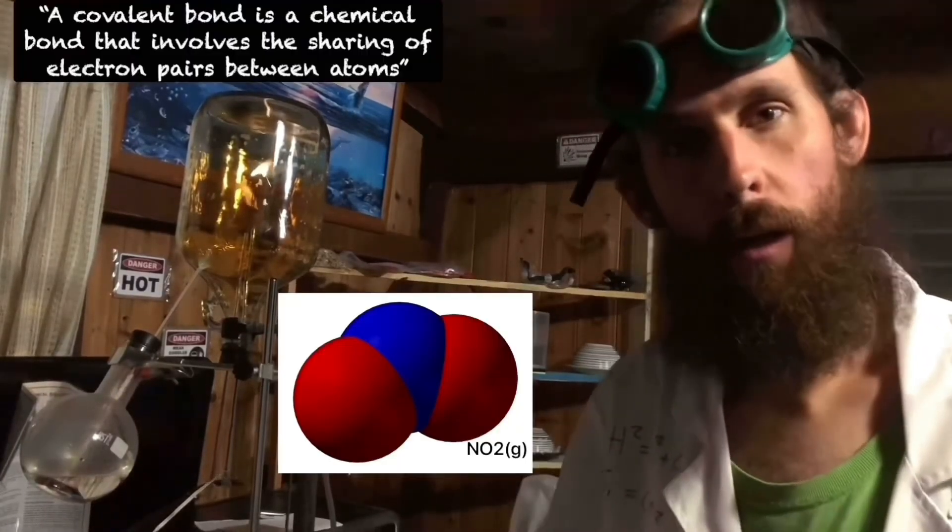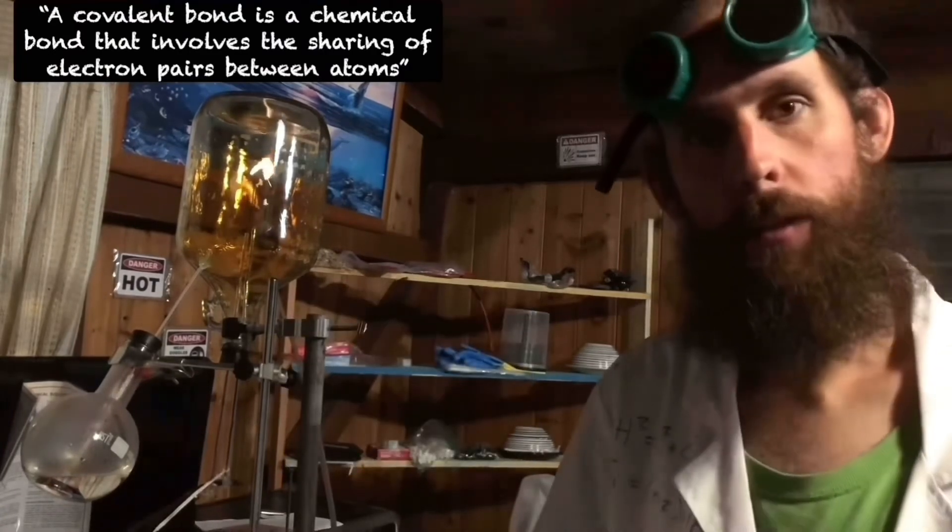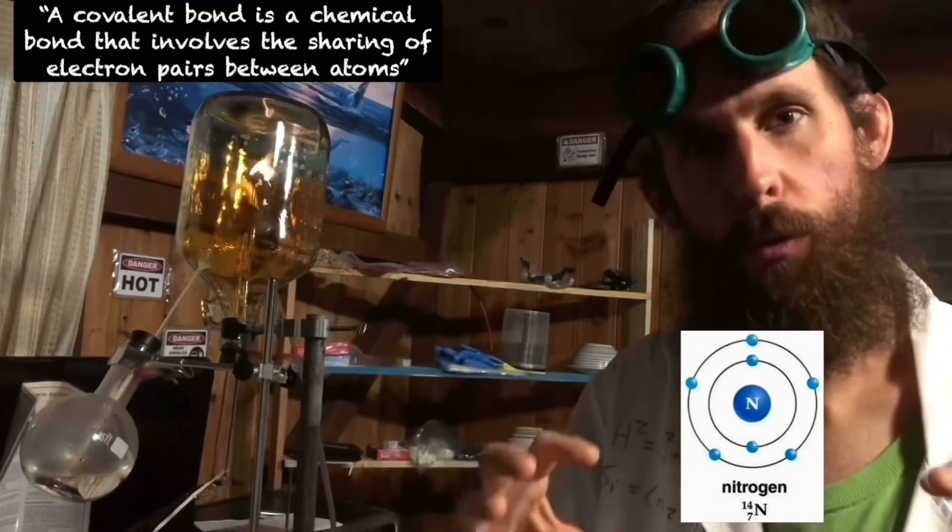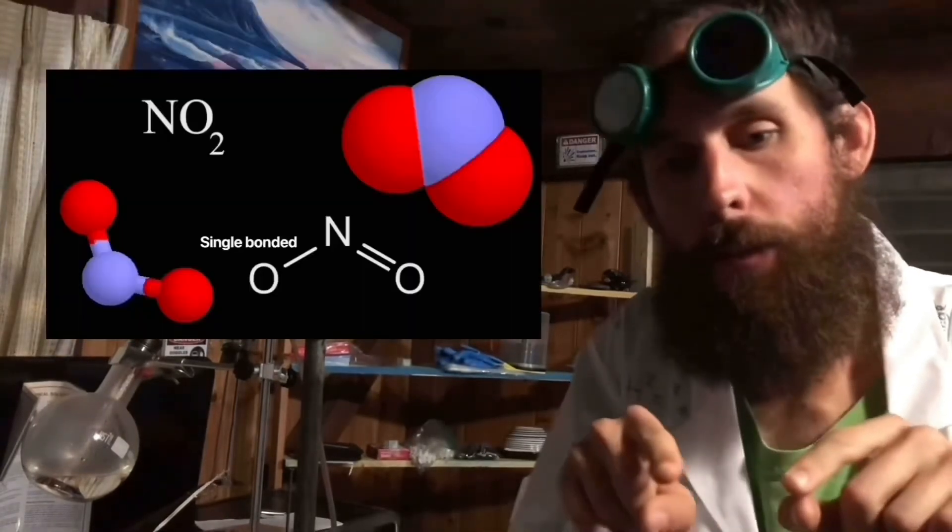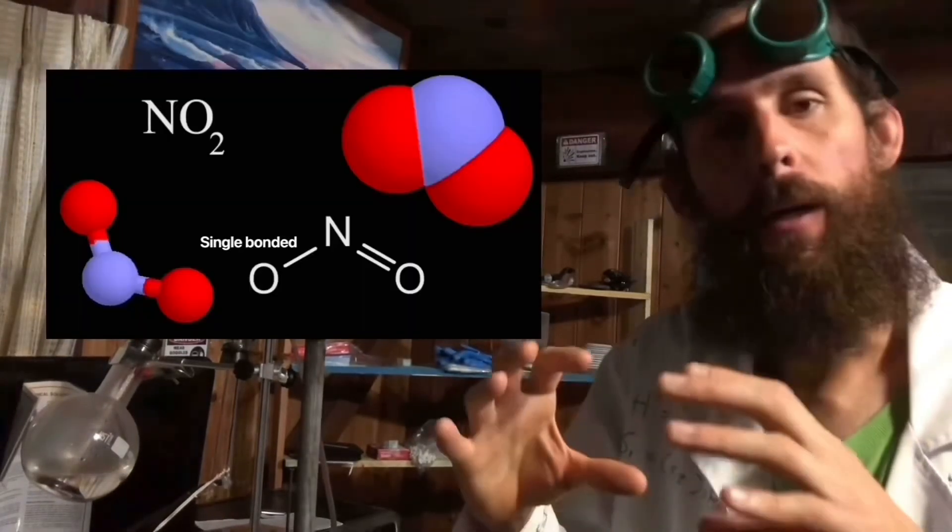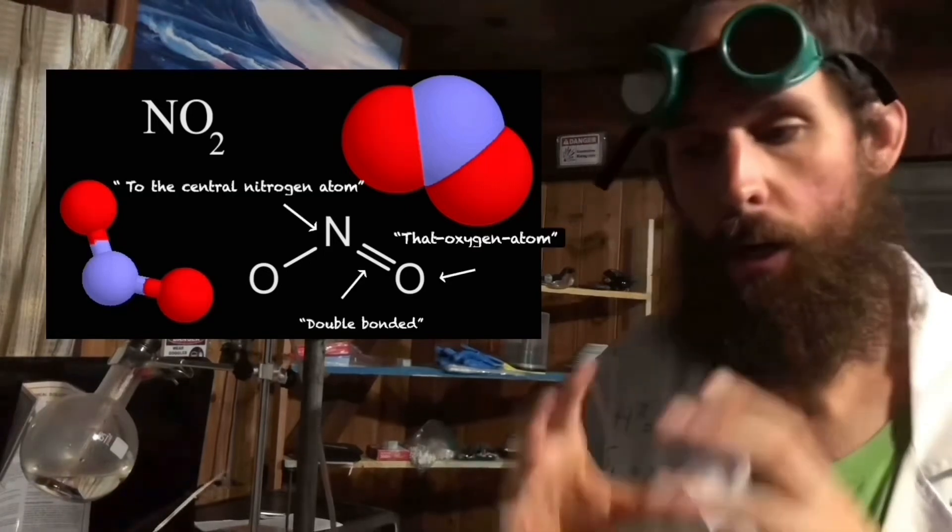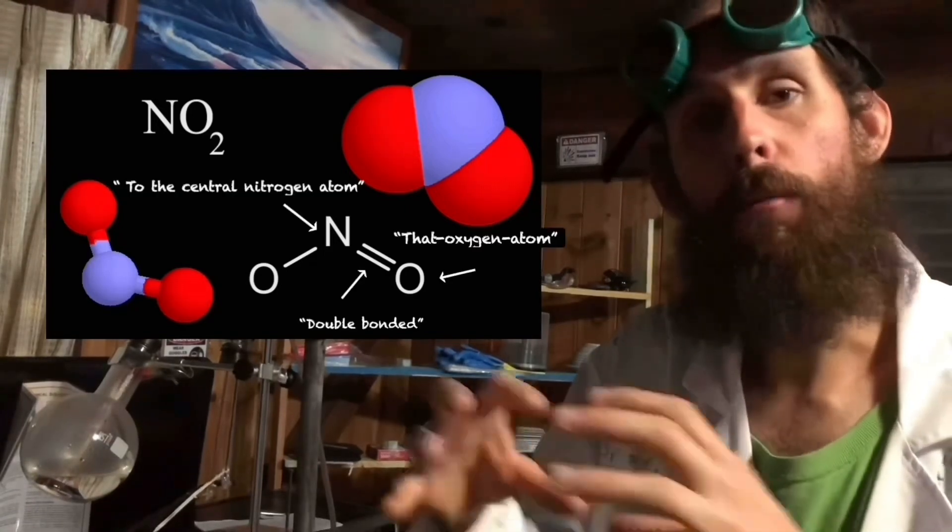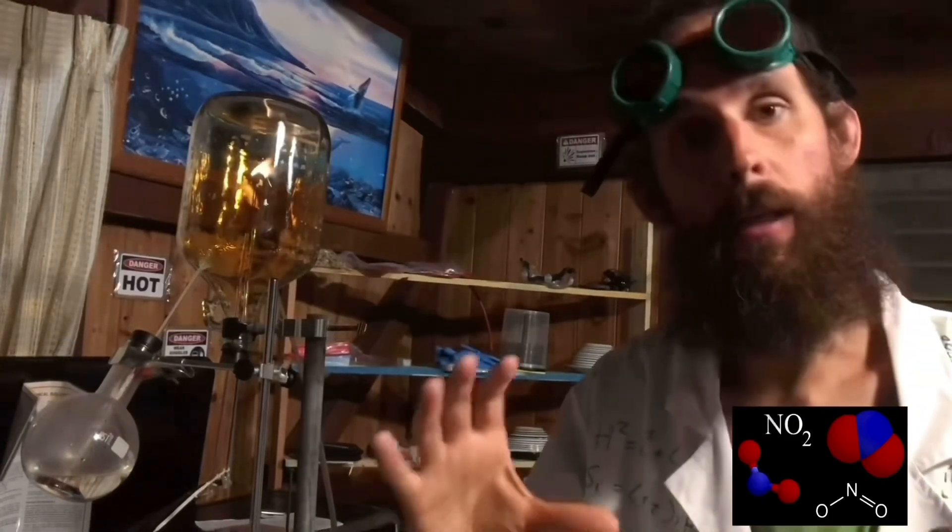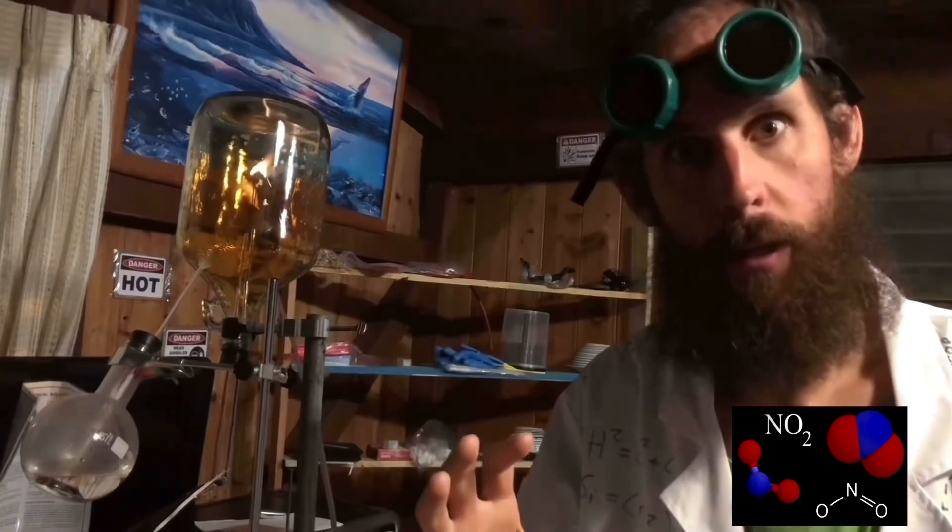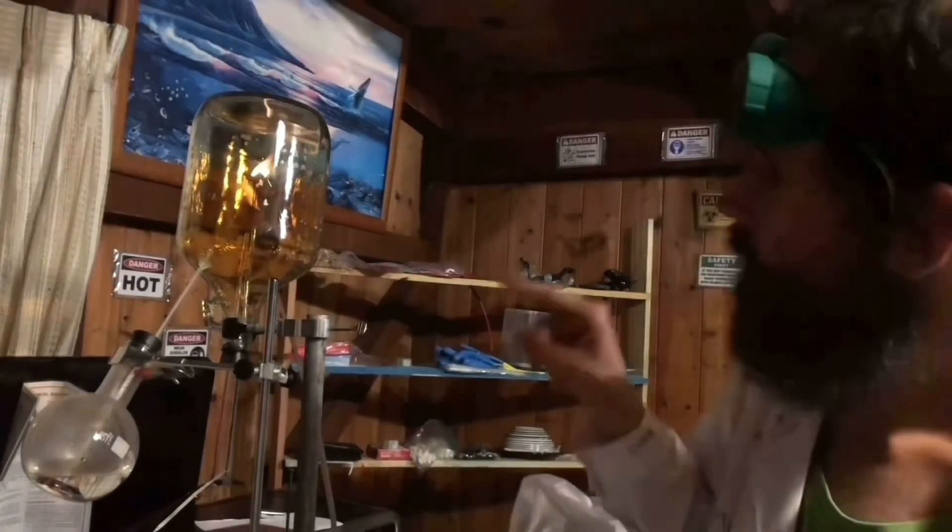NO2 is a covalent compound that is composed of a central nitrogen atom. It is single bonded to an oxygen atom, and that oxygen is double bonded to the central nitrogen atom, creating nitrogen dioxide. And that is what you see in the reactor.